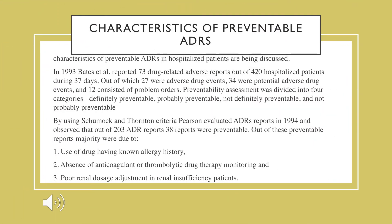Among all reported ADRs, certain ones can be prevented with proper monitoring and care. ADRs are monitored in two types of patients — inpatients (hospitalized) and outpatients. Analysis is best done in hospitalized patients due to direct supervision. In 1993, within 37 days among 420 hospitalized patients, 73 drug-related adverse reports were recorded: 27 were adverse drug events, 34 were potential adverse drug events. Preventability assessment is divided into four categories: definitely preventable, probably preventable, not definitely preventable, and not probably preventable.